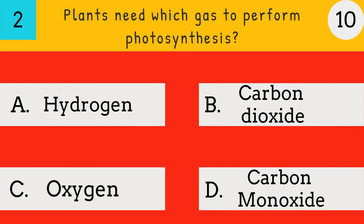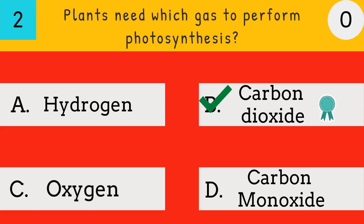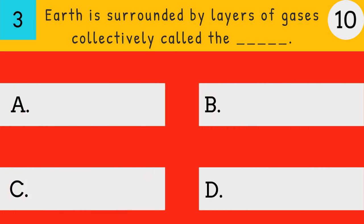Plants need which gas to perform photosynthesis? Hydrogen, carbon dioxide, oxygen, or carbon monoxide? The answer is carbon dioxide — plants need carbon dioxide gas to perform photosynthesis.